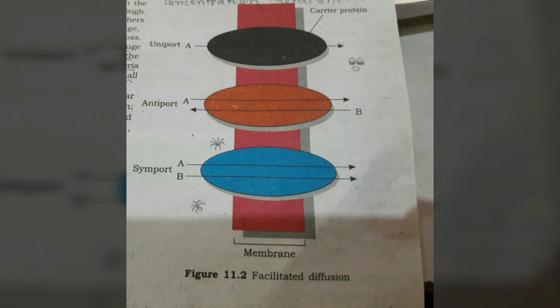Comparison of different transport processes (Table 11.1): Diffusion — whether facilitated or not — takes place only along a gradient and does not use energy. Simple diffusion does not require special membrane proteins, is not highly selective, does not saturate, and cannot achieve uphill transport. Facilitated transport requires special membrane proteins, is highly selective, saturates, but still cannot achieve uphill transport without ATP. Active transport requires special membrane proteins, is highly selective, saturates, can achieve uphill transport, and requires ATP energy.